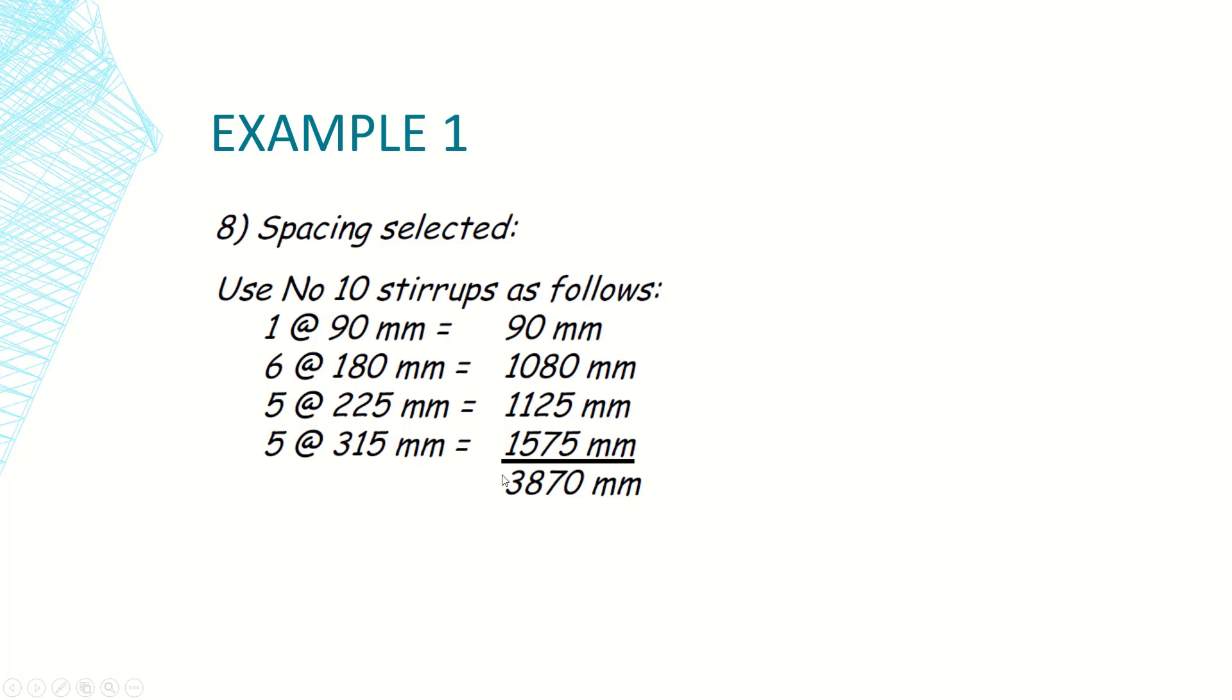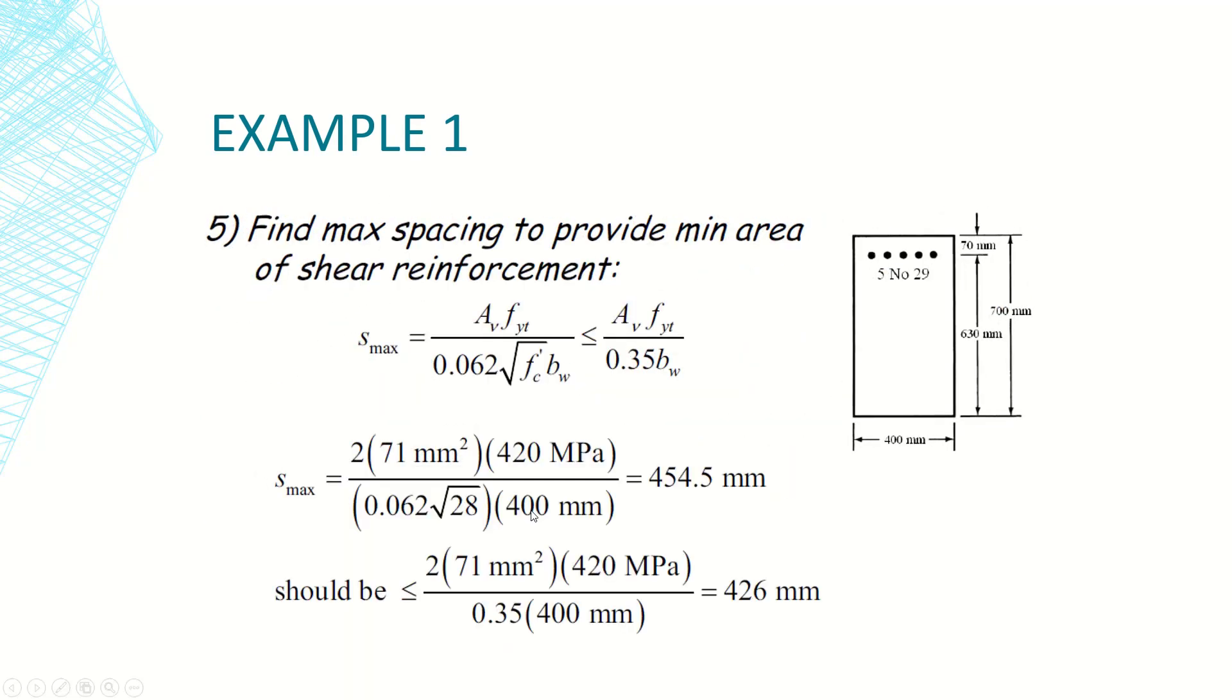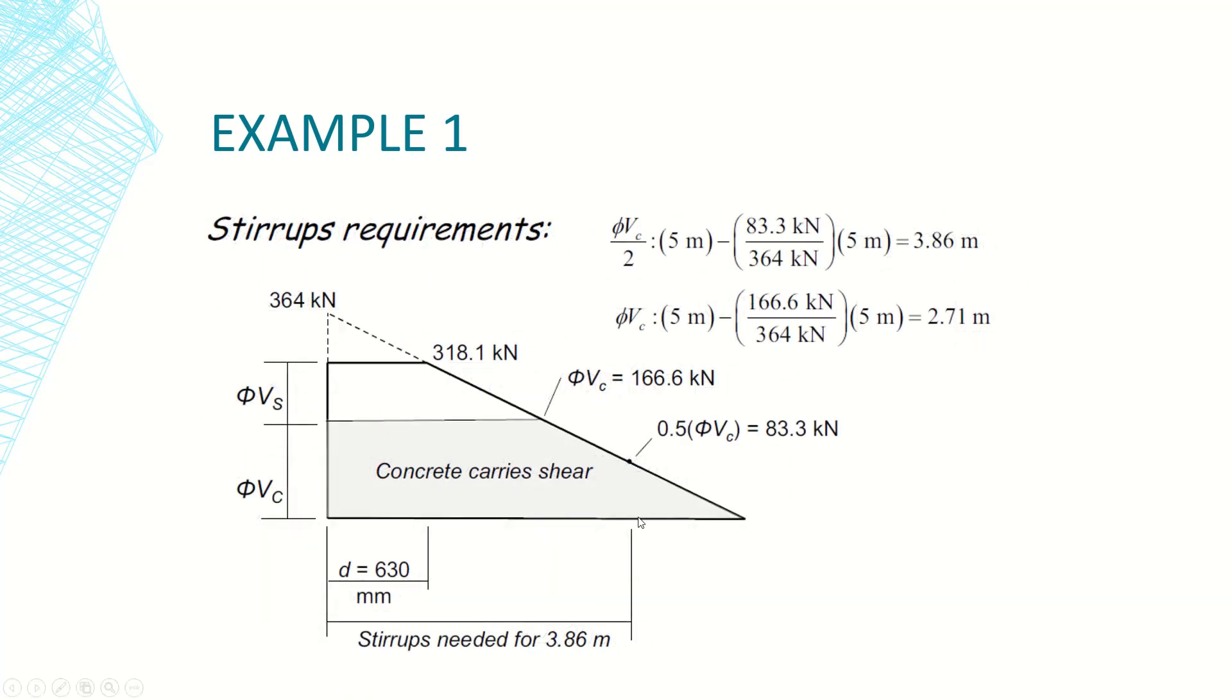And then at the end of the second zone, after two meters, we used maximum spacing. If we calculated the total distance measured, it will be equal to the distance from the face of the support until the limit where we do not need any shear reinforcement, which is 0.5 Vc over 2. Here the distance is 3.87. The total distance from the face of the support till the zone or the limit where we do not need any more shear reinforcement was 3.85. So beyond this limit we don't need any shear reinforcement since the shear force is less than half the concrete capacity, so concrete itself can handle it without any special requirement as per code.